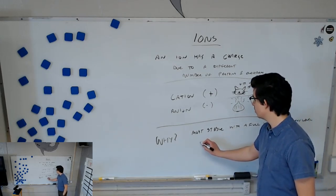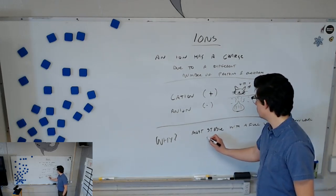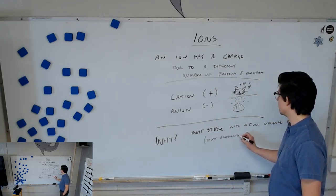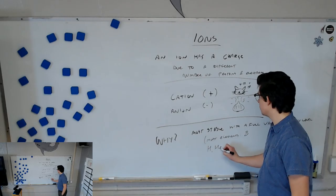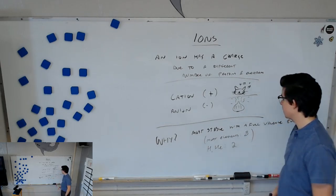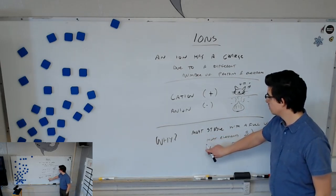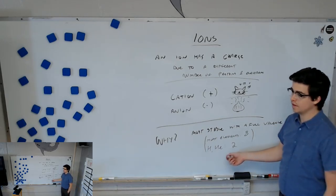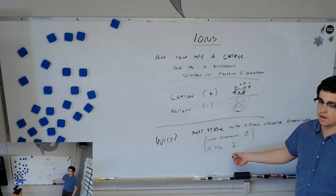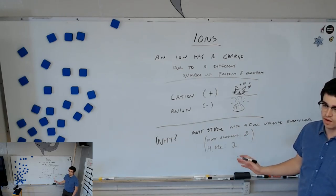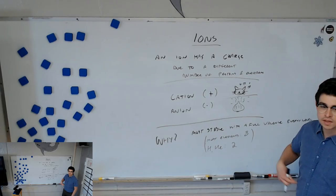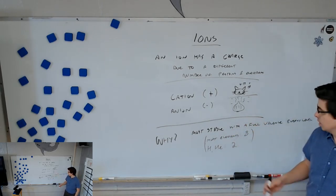Yep. So, for most elements, that number is eight. But for hydrogen and helium, it is two. We could say, sometimes we say they're happier this way, that's not true, atoms don't feel happiness. We say they want to be this way, that's not true, they don't have wants or needs. They are most stable this way, that is true.